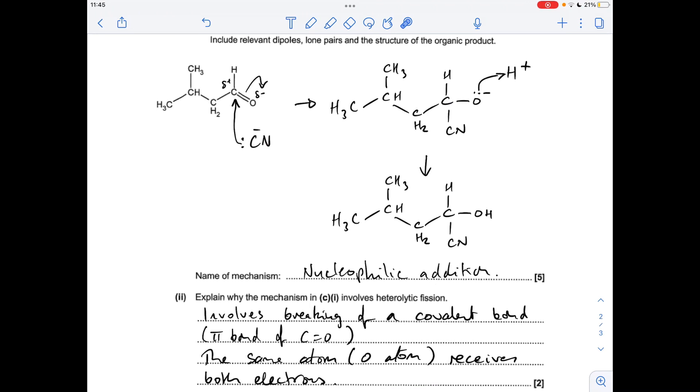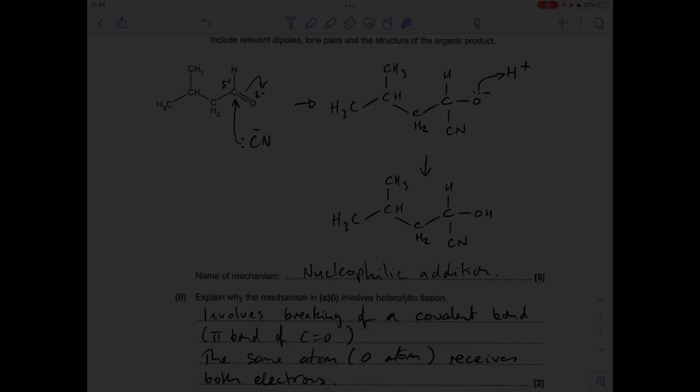And finally, why does the mechanism involve heterolytic fission? So there's a couple of things we need to say. The fission part is the fact that it involves the breaking of a covalent bond, or you could say it involves the breaking of the pi bond of the C double bond O. Heterolytic because the same atom, the oxygen atom, receives both of the electrons.